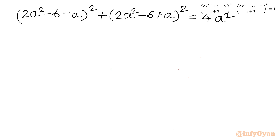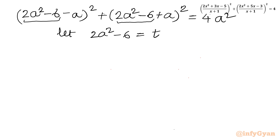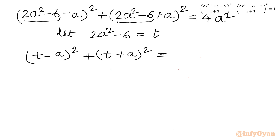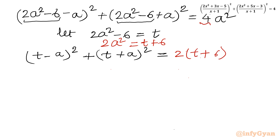Now I will consider one more substitution. As you can see, both brackets contain 2a² - 6. So let us consider 2a² - 6 = t. Then the equation becomes (t - a)² + (t + a)² = 4a². From here, 2a² = t + 6, so 4a² = 2(t + 6).